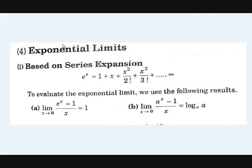Exponential limits are based on the series expansion: e^x = 1 plus x plus x²/2! plus x³/3! plus ... The key formulae are: limit x→0 of (e^x minus 1) / x = 1, and limit x→0 of (a^x minus 1) / x = log a base e. The first follows because e^x minus 1 divided by x gives 1 plus x/2! plus ..., which equals 1 as x→0. The second uses the series expansion of a^x in terms of log a.